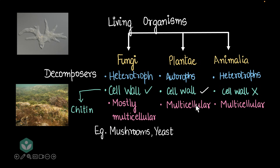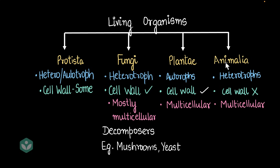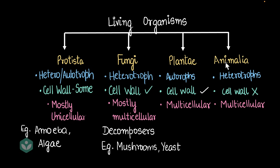We make another category for these organisms, and we call it protista. Protista are either heterotrophs or autotrophs. Some protista have cell walls. Protista are mostly unicellular. Examples of protista include amoeba, algae, and paramecium.